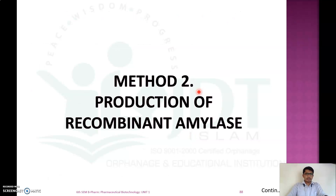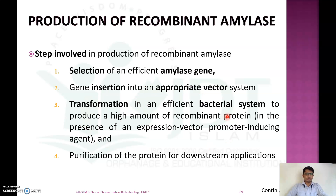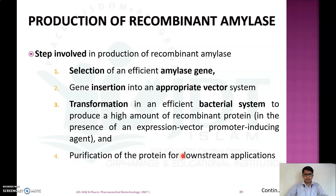The second method is production of recombinant amylase using recombinant DNA technology. The steps involved are: first, select an efficient alpha amylase gene; then insert that gene into an appropriate vector; transform the recombinant vector into a bacterial system to produce high amounts of recombinant protein; and finally purify the protein after expression for downstream applications.